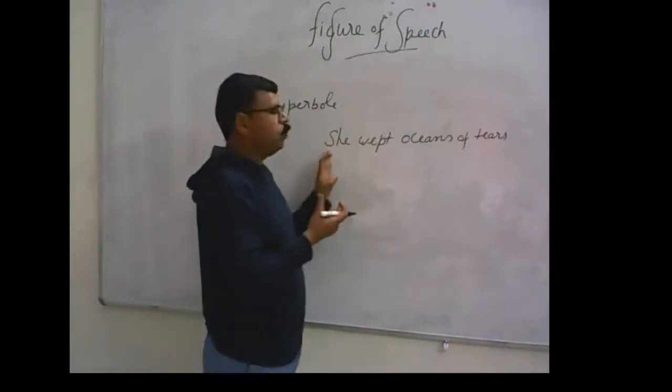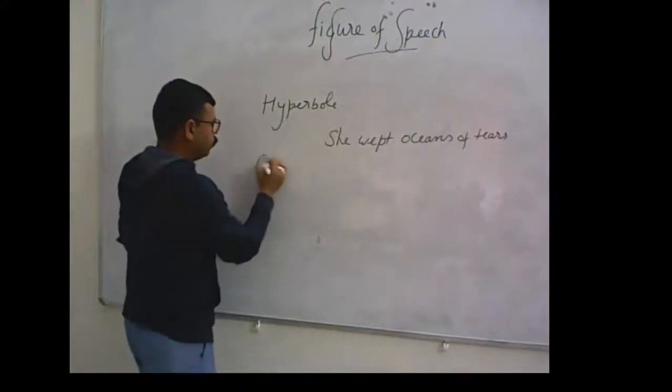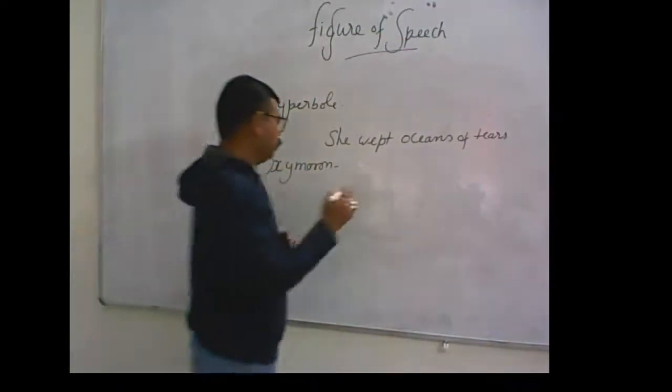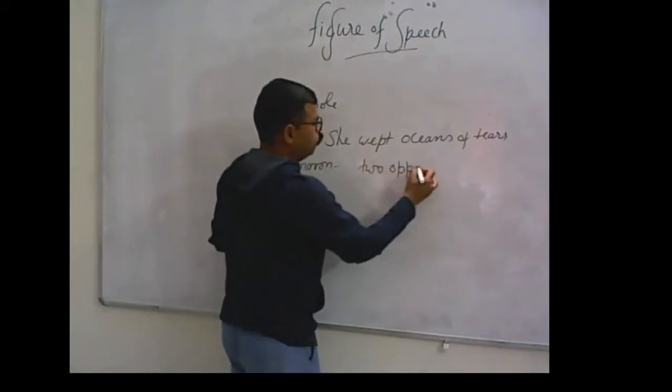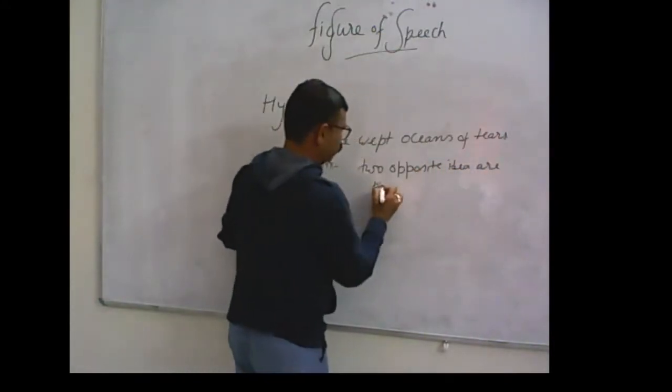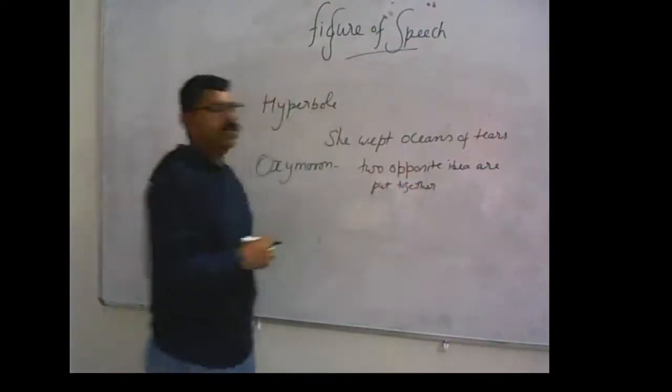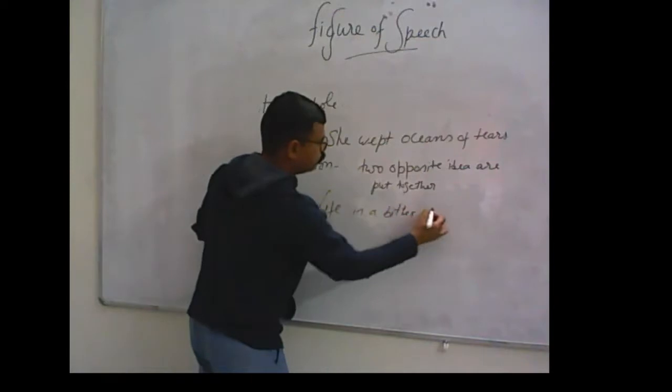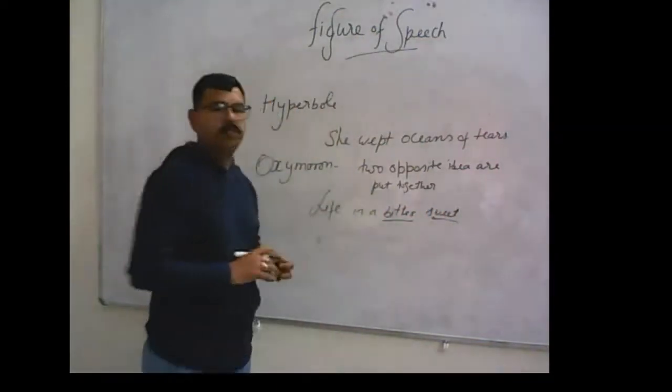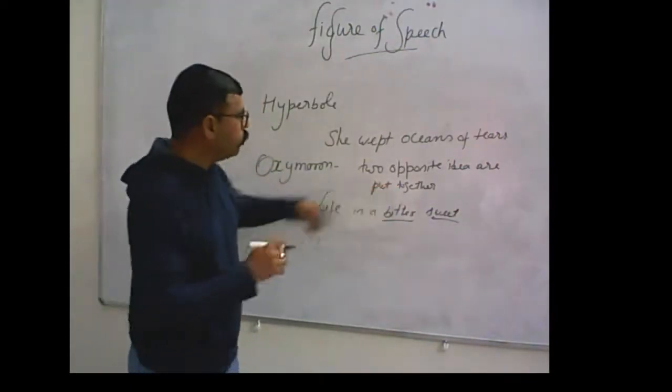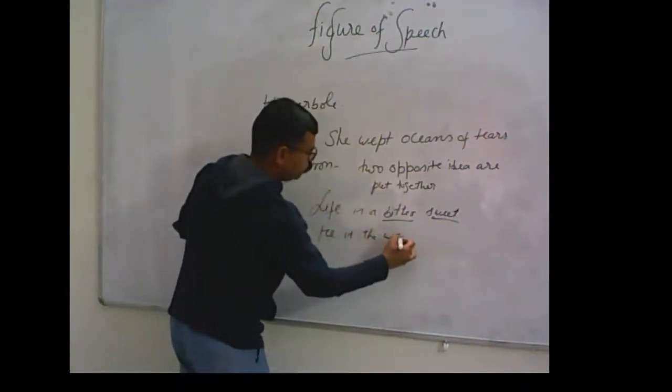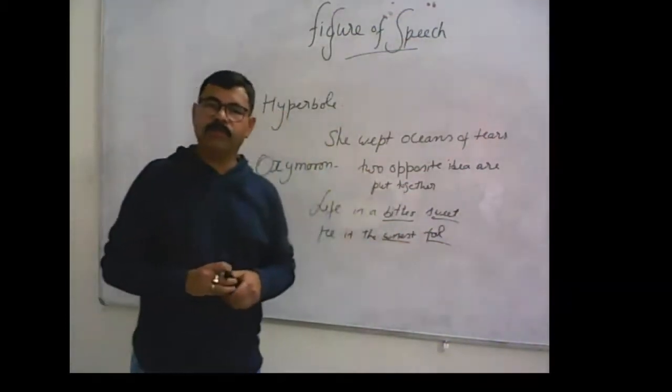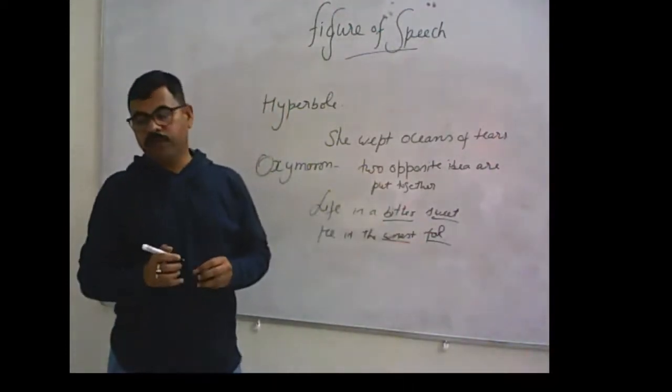Next is oxymoron. Oxymoron means in this figure of speech, two opposite ideas are put together. For example, life is bitter sweet. Bitter and sweet both are opposites. He is the wisest fool. Most intelligent person and fool, both are opposite. These are examples of oxymoron, which means Virodhabhas Alankar.